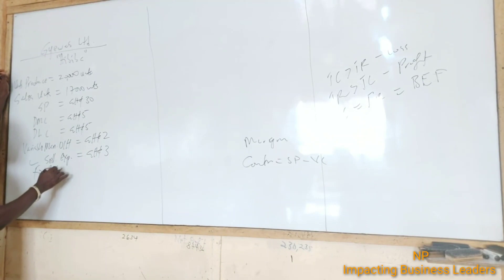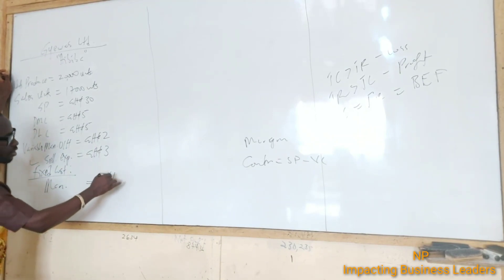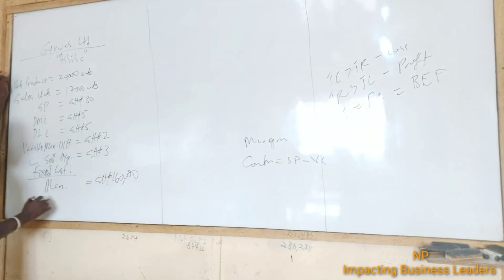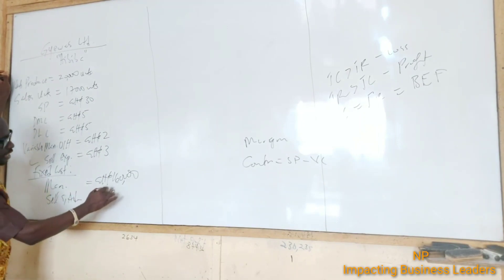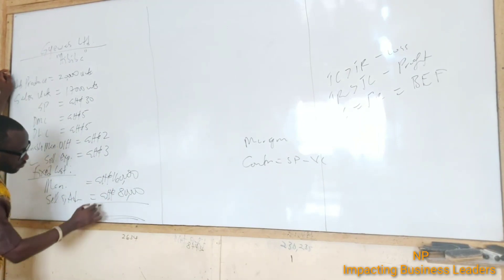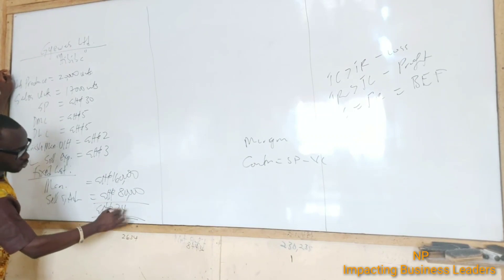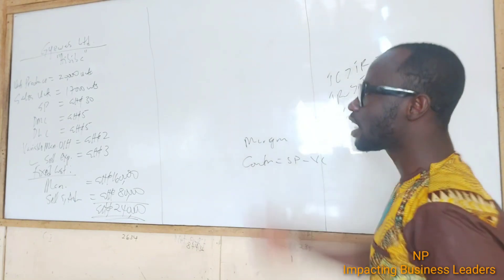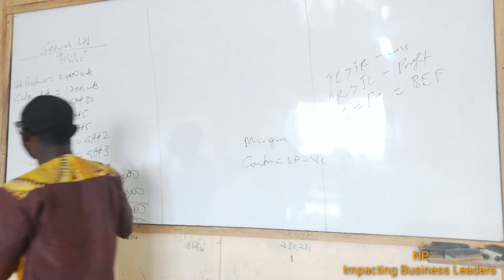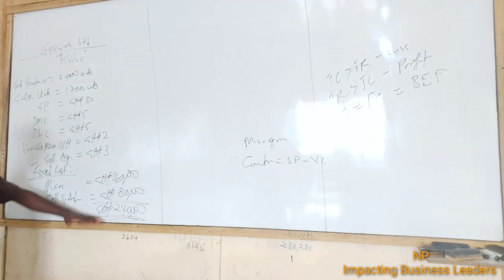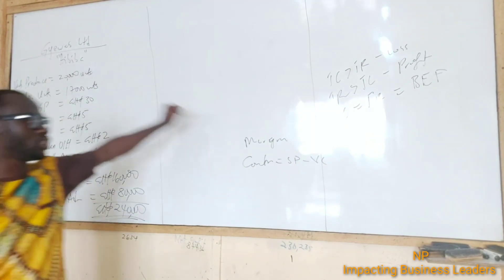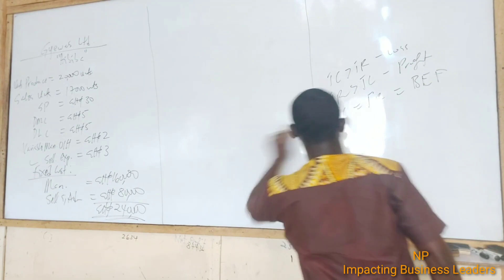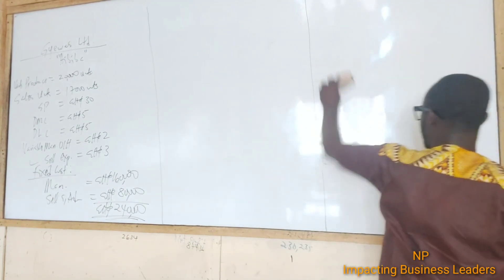The fixed costs are: manufacturing overhead $160,000, and selling and admin $80,000, giving us a total fixed cost of $240,000. These are the items in the question. For 25 marks, the examiner is asking us the questions below, so let's take them and answer.